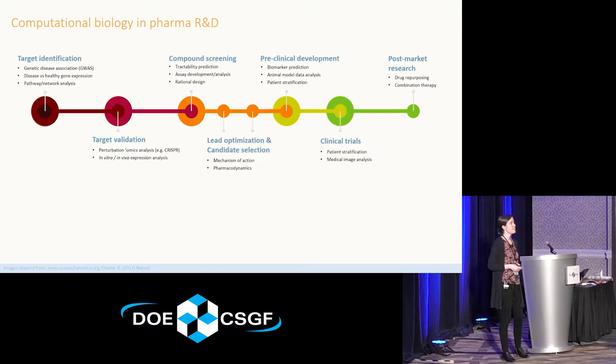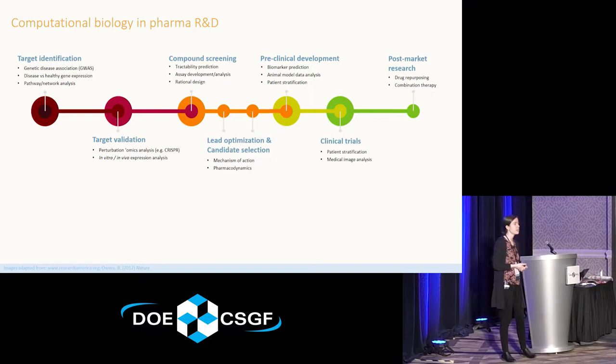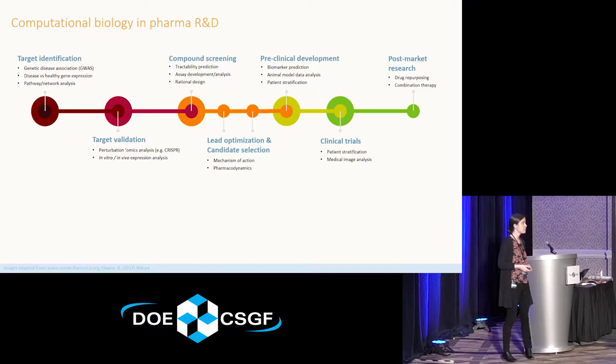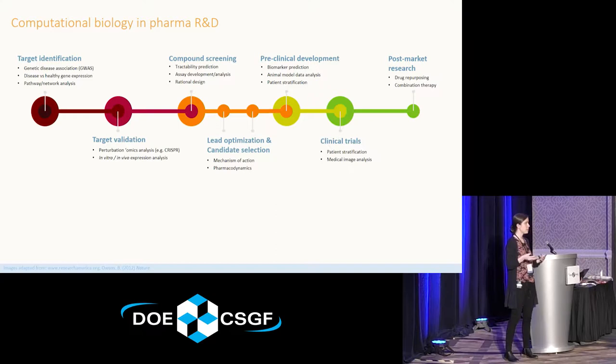What does a computational biologist do at a pharmaceutical company? We do a little bit of everything. We work anywhere from the earliest parts of drug discovery and target identification — figuring out what genes are associated with diseases and which of those genes encode for proteins that would actually be good drug targets, because not all proteins are amenable to being targeted by a small molecule or an antibody. We also work in the later stages, such as preclinical development and clinical trials, often helping with identifying biomarkers — a genetic mutation or perhaps a protein detected from the blood that helps predict what patients are most likely to respond to a treatment.